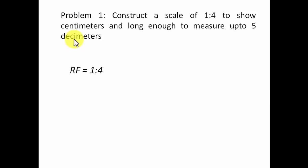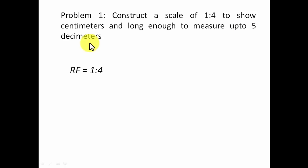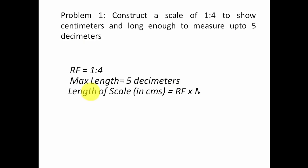We have a representative factor (RF) of 1:4, meaning the true dimension will be reduced by four times. The scale should be able to measure up to five decimeters, so the maximum length is five decimeters. The length of scale is given by the formula: RF multiplied by maximum length, so we have 1/4 multiplied by five decimeters.